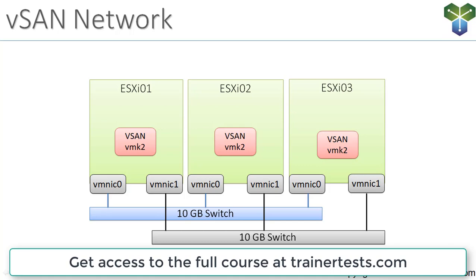On each of these ESXi hosts you can see we've got a couple things going on. ESXi 01 has two VM NICs, which are physical Ethernet ports on the ESXi host — so this host has two physical Ethernet adapters, let's say 10 gigabit per second. Each one of these physical adapters is connected to a different physical switch. The same is true on ESXi 02 and ESXi 03. All three hosts have two physical 10 gig VM NICs, and each VM NIC is connected to a different physical switch.